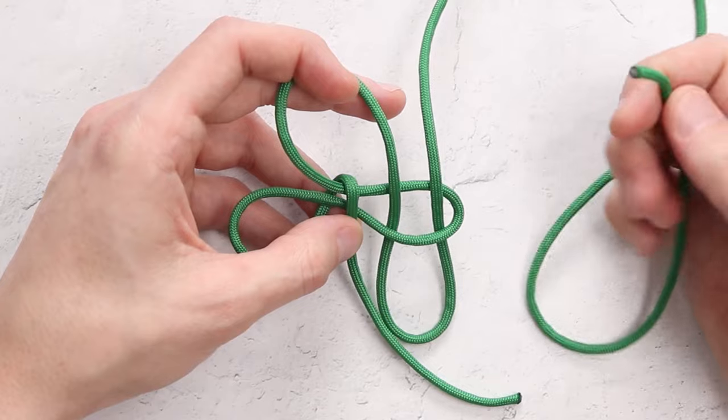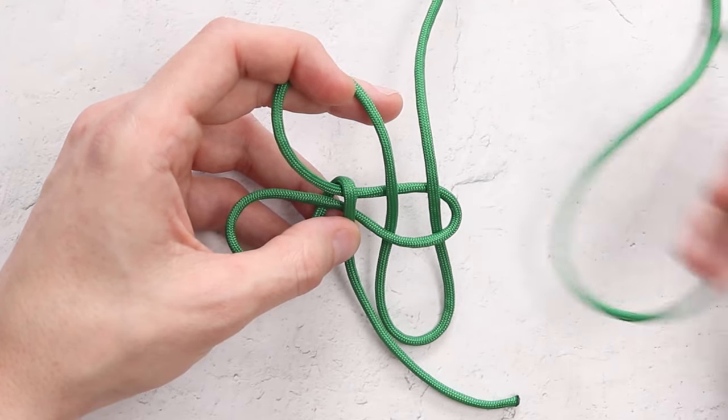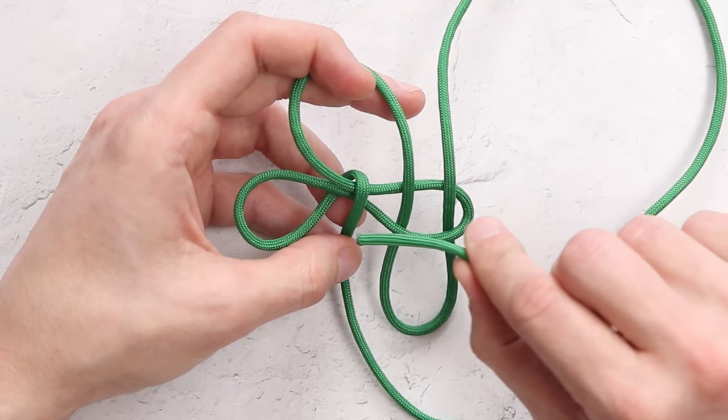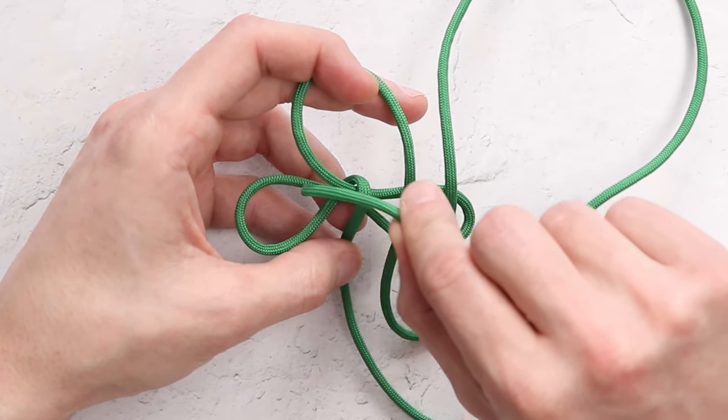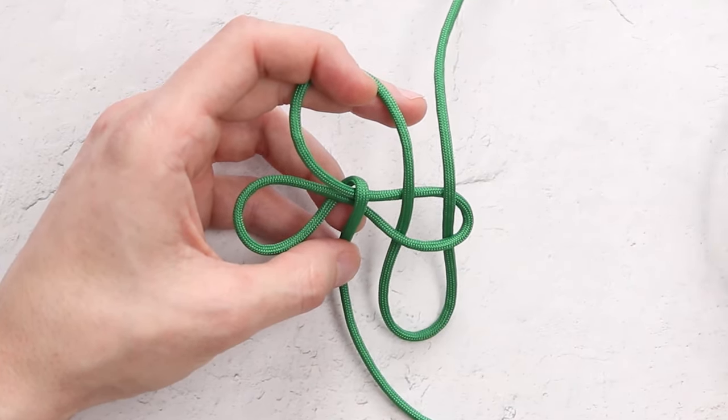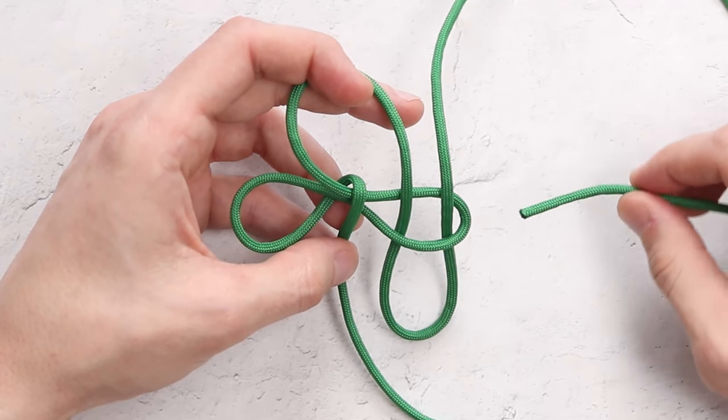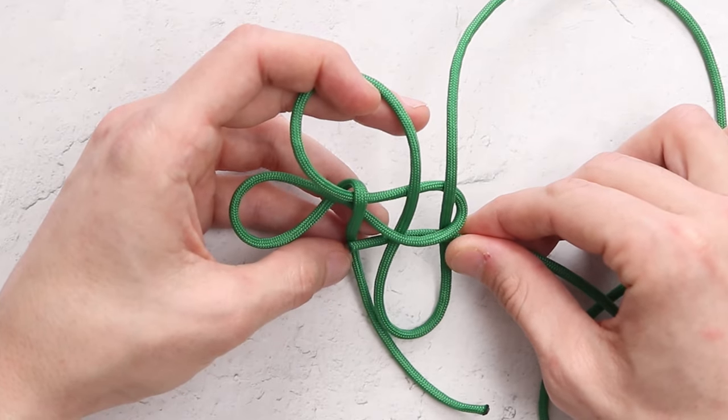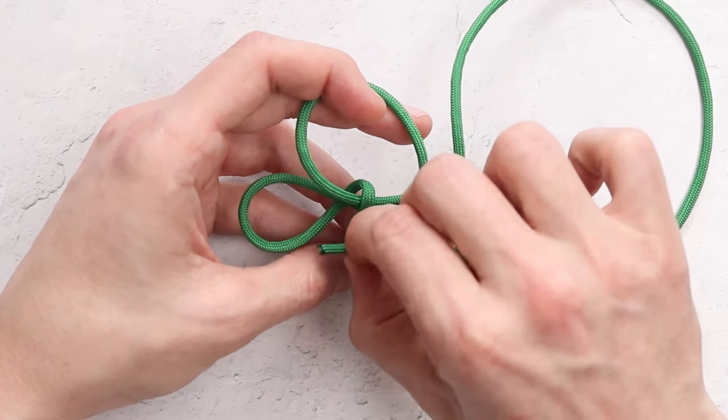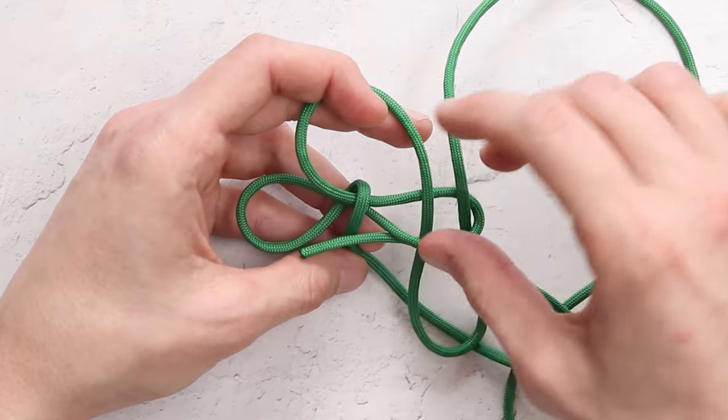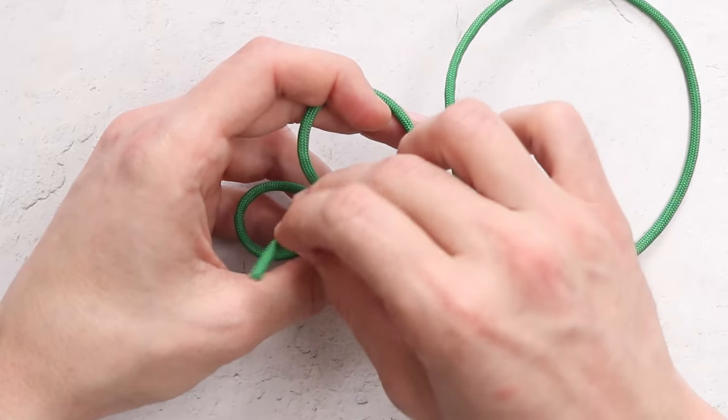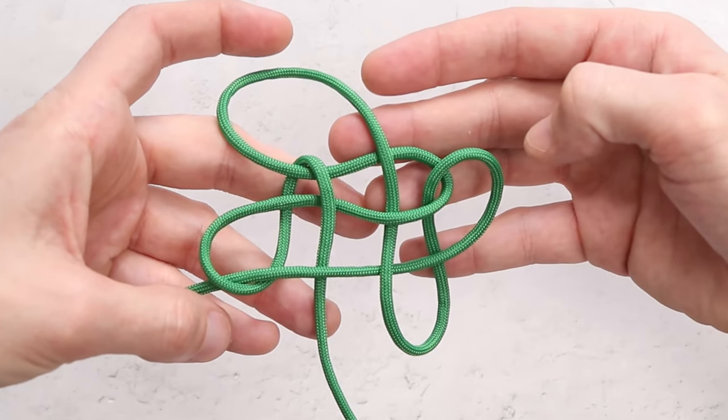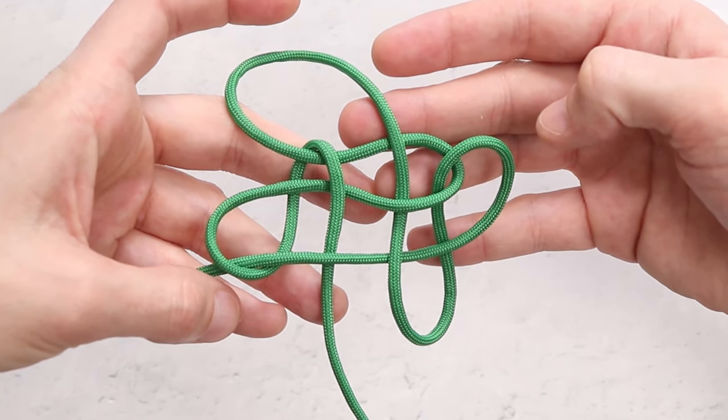Our next step is we're going to take the same strand, the right working strand, we're going to go over, under, over, over, until we hit the bottom left loop. So take our strand, over, under, over top of the middle, over top of the loop on the left, and through. So at this point, you want something that looks like that.